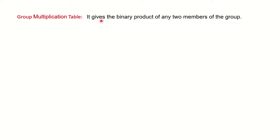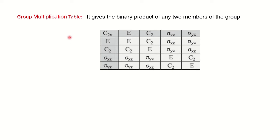Group multiplication table — what is that? Basically, this table gives the binary product of any two members of the group. To understand this GMT, you should have knowledge of point groups, symmetry operations, and character tables. If you have that knowledge, you can go ahead with the video; otherwise, I will share the links so you can watch those videos first.